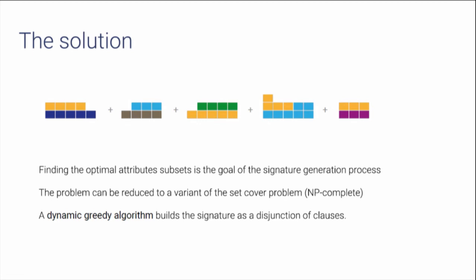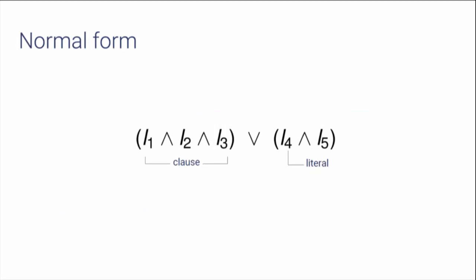This is actually a variant of the set coverage problem, which is unfortunately very hard to solve because it's an NP-complete problem. But since we are not interested in a global optimal solution — we just need a local optimal solution — I have developed a dynamic greedy algorithm to solve the problem and automatically generate a signature. So generating a signature is not such a big issue; the main challenge is to evaluate a signature. In order to better understand this process, I will introduce a couple of formulas.